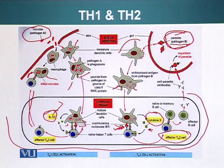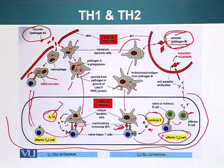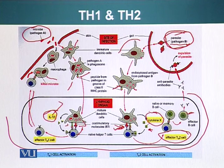Helper T cell type 2 will not go and stimulate macrophages or cytotoxic T cells as in the case of helper T cell type 1. Instead, it will stimulate B cells, causing these B cells to become effector B cells, and it also helps B cells switch the class of antibodies — as we have talked about with different types of antibody classes. This is how dendritic cells activate and guide T cells into a particular lineage.